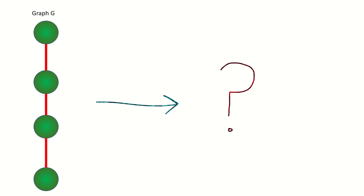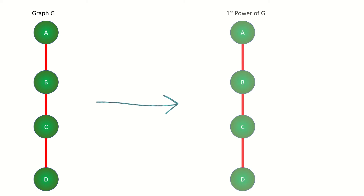For example, the first power of an undirected graph G is a graph with the same vertex set and edge set as G. In other words, it is the same graph.